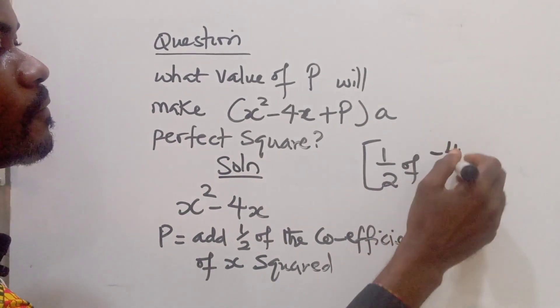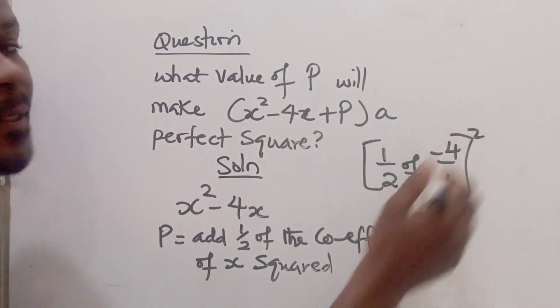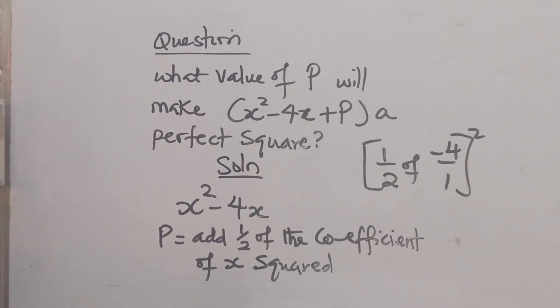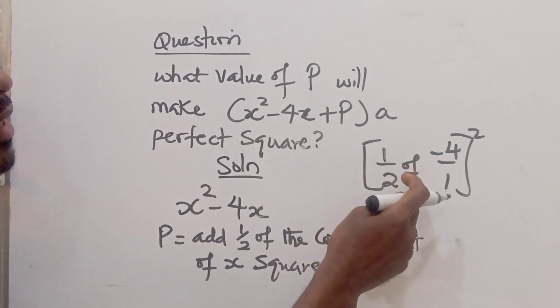So if we put it here, so we have minus 4 over 1 squared. So if we work this out, we get the value of p. So now let's work this out. Of course this means times.